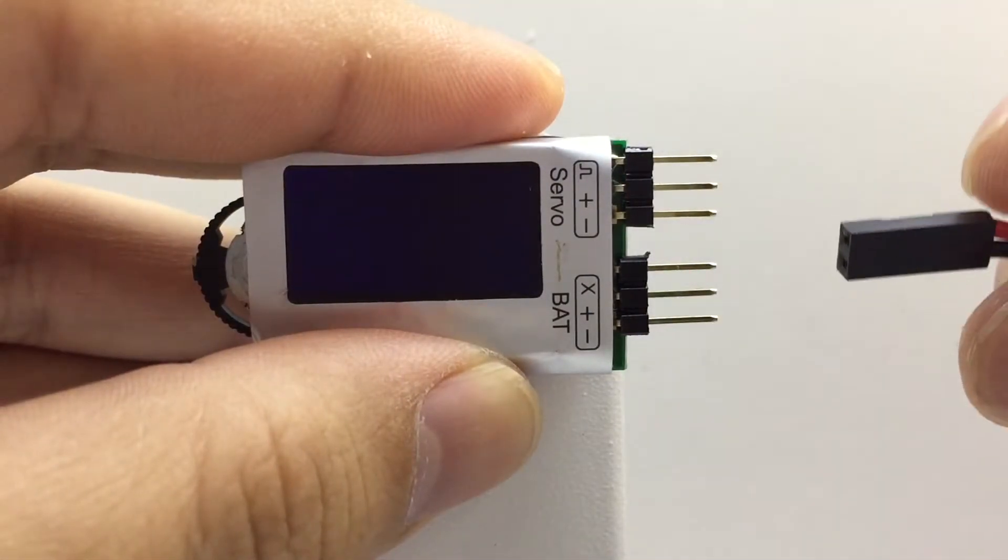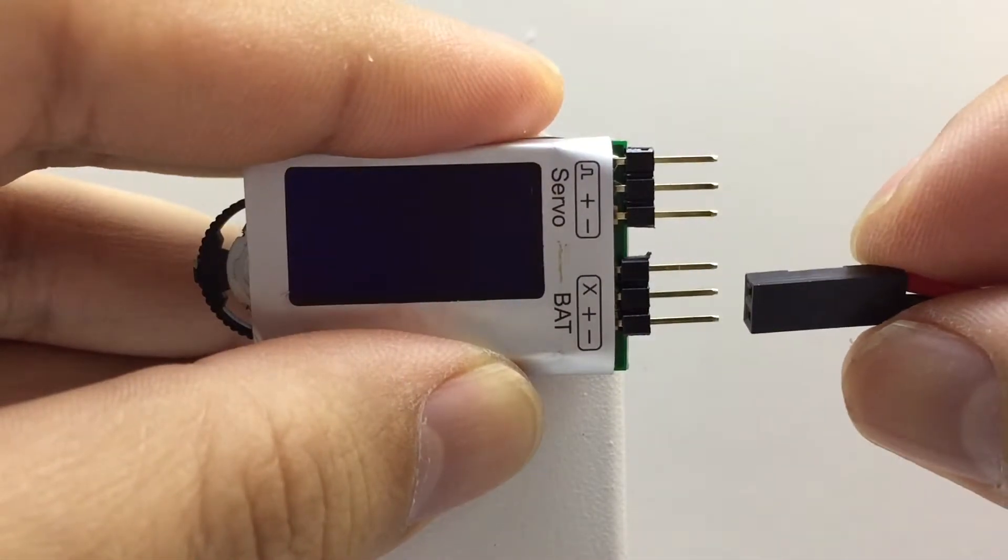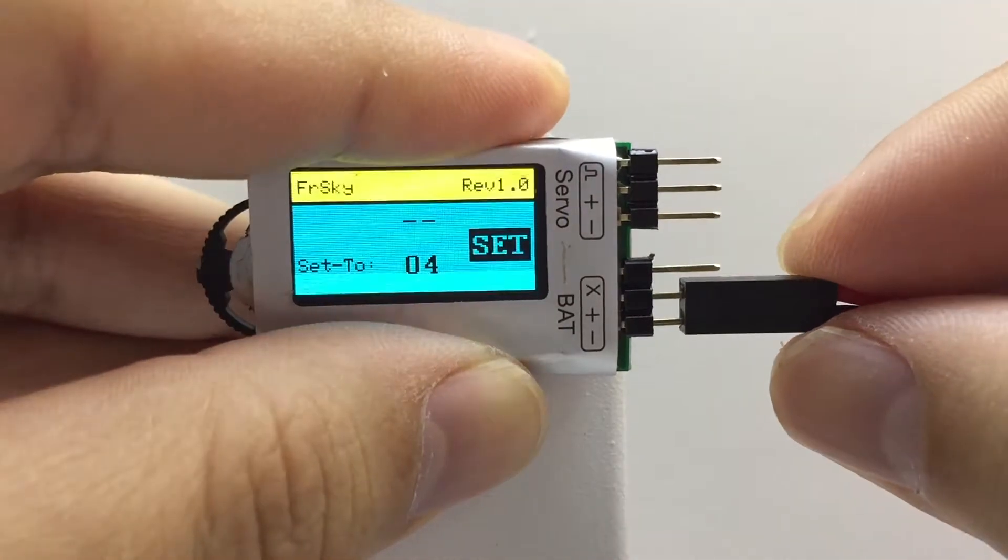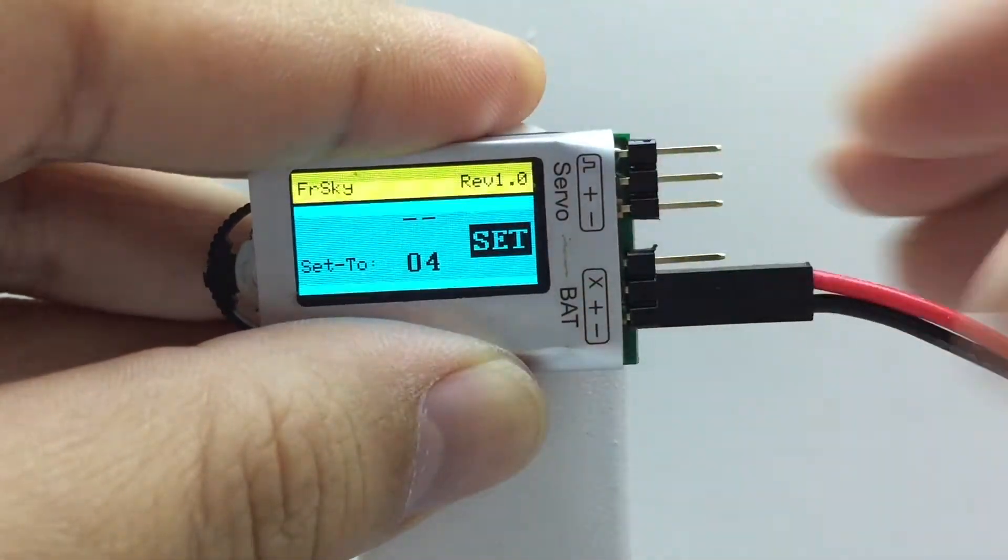First connect power to the changer pins marked battery. O4 may be displayed by default.